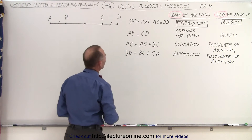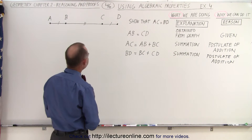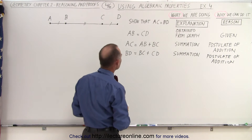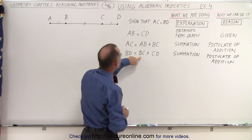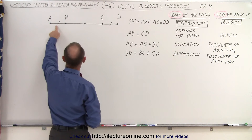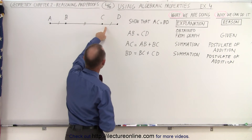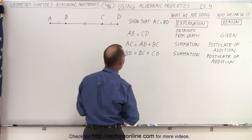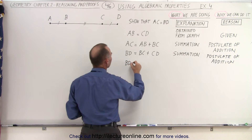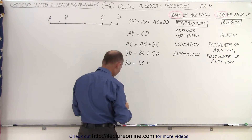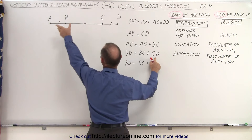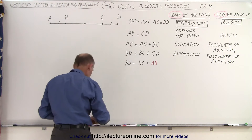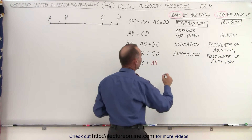Now we somehow have to prove this. So what I could do is say: AC is equal to AB plus BC, and BD is equal to BC plus CD. But we know that segment AB is equal to segment CD, which means we take segment CD and replace it by AB. So now we write BD is equal to BC plus AB — instead of CD, we write AB because we know that's the same length.